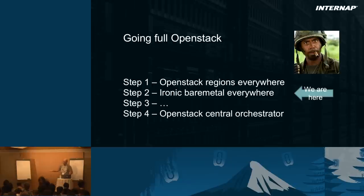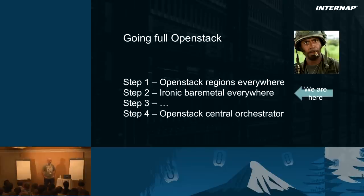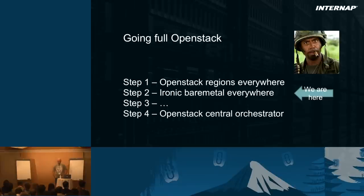So providing a classic public cloud first. Then we're going to go with Ironic bare metal everywhere — we'll be able to provision bare metal servers in all these facilities. After that, we'll probably go with NFV in the future, SDN, all the good stuff. The goal is to have OpenStack as a central orchestrator for all these data centers.